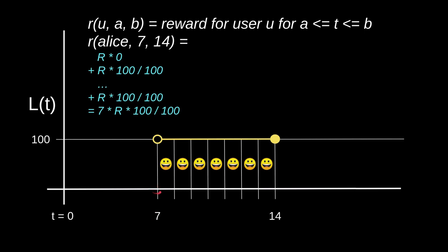Let's calculate how much reward Alice will receive from T equals 7 to T equals 14. At T equals 7, L(T) is 0, so she receives 0. At T equals 8, Alice has staked 100 tokens and the total token staked is 100, so she receives R times 100 divided by 100. At T equals 9, the amounts are the same, so again she receives R times 100 divided by 100. This continues up until T equals 14 — that's 7 seconds total — so she receives 7 times R tokens in total.